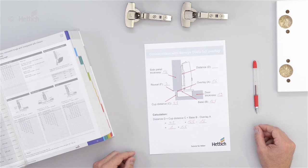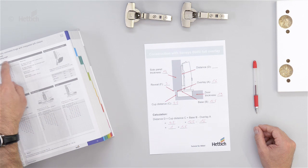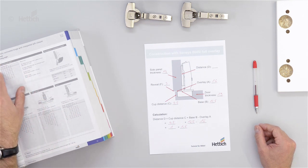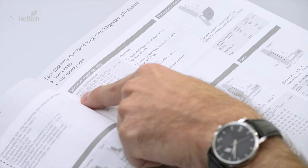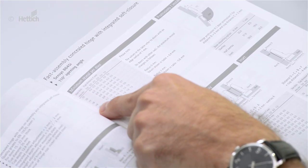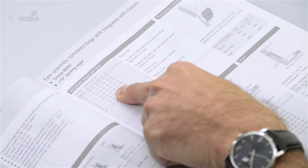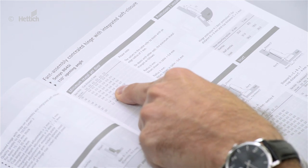In the last step we have to cross check the minimum reveal. We have a little table here in the catalog. The door thickness is 19mm, that was given, and also the cup distance C of 4.5mm.